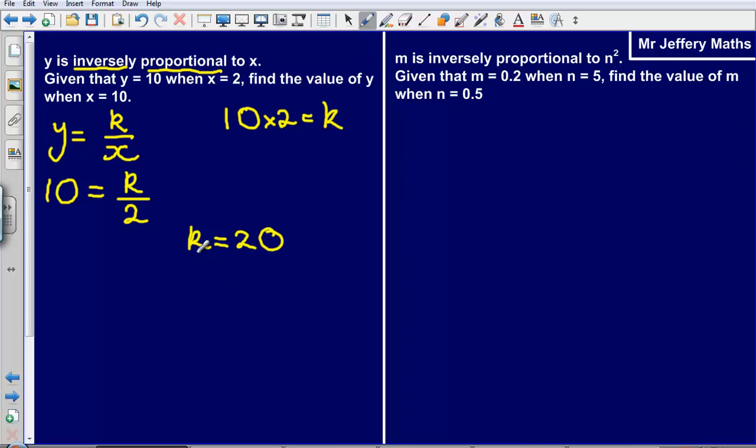Now we have figured out what our value for k is equal to, we can then use this to write our formula. And our formula this time, so we are replacing k with 20, we are going to have y is equal to 20 over x.